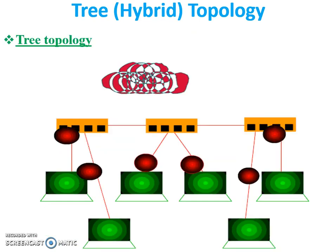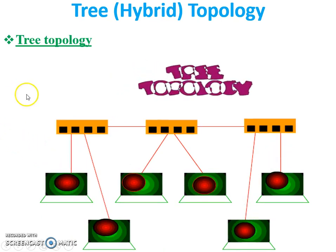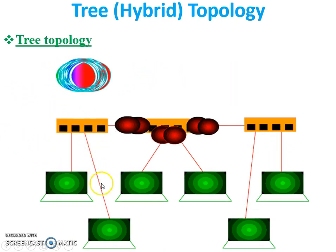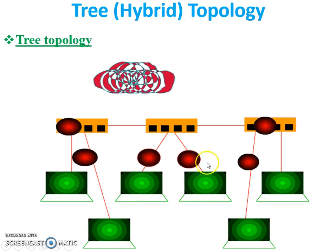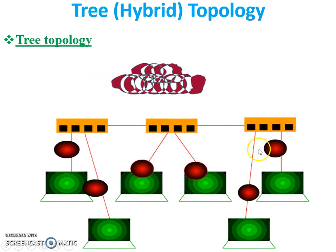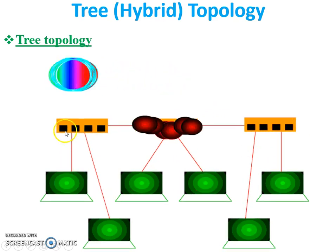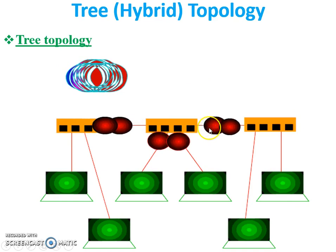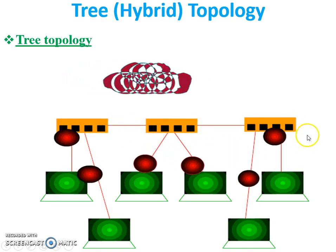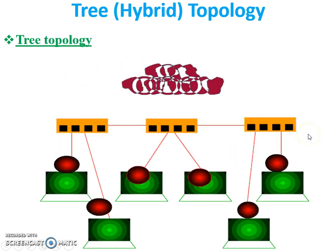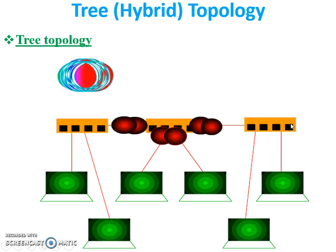Now an animation. You can see this is the tree topology. This is a star segment, this is another star segment, this is another star segment, and this is another star segment. All the star segments are connected with each other by a single cable. So this is tree or hybrid topology.